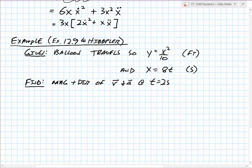For our solution, I'll start with what I know. I know x equals 8t. Taking the derivative, my velocity in the x — the same as x-dot — must be equal to 8 feet per second.